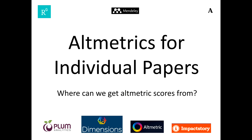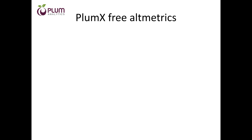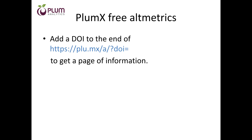Now I'm going to talk about where we can get altmetrics data from. I'll look first at altmetrics for individual papers. Suppose you have one journal article or perhaps a book and you want to know the altmetrics scores. I'm going to talk about four sources: Plum Analytics, Dimensions, Altmetrics, and Impact Story.